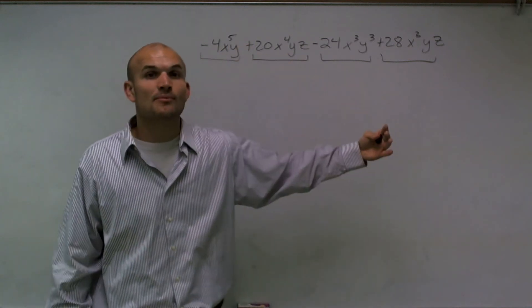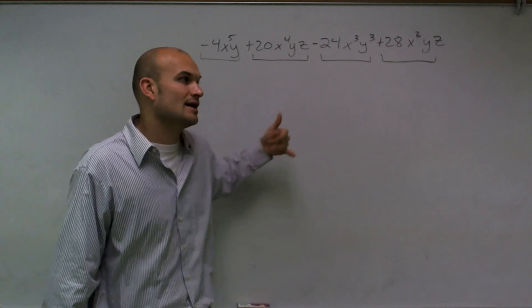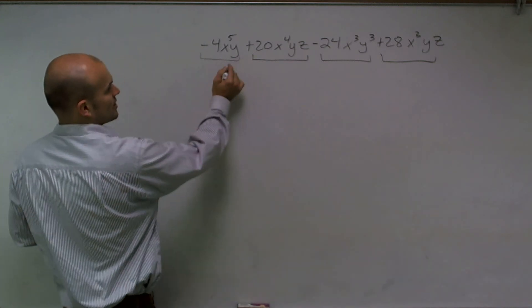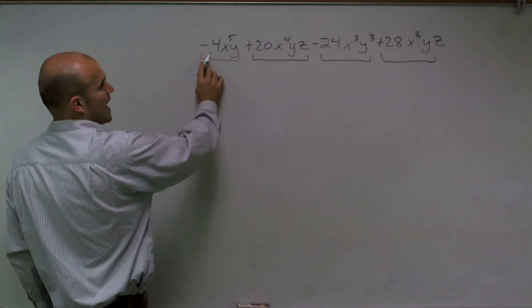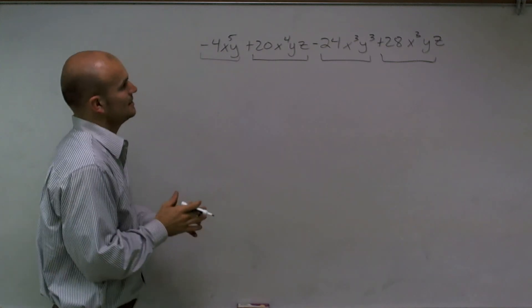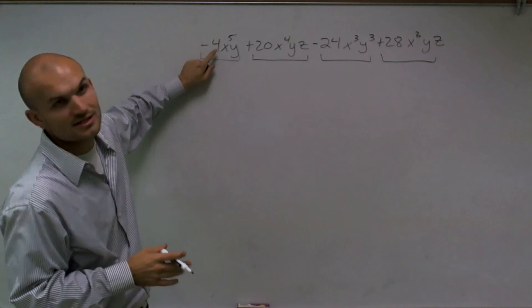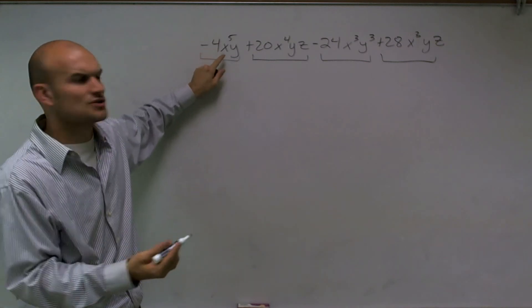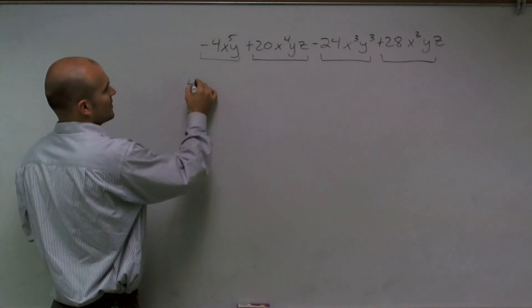And once we figure that number out, all we're going to do is divide it out and put it outside. So I look at these two terms and I notice that after two, the next number would be a four. And I can't go any higher than four because there's no number that divides into four that's larger than four. So I can factor out a four.